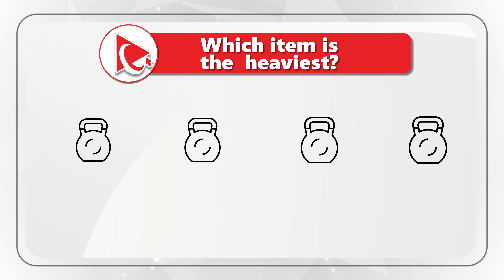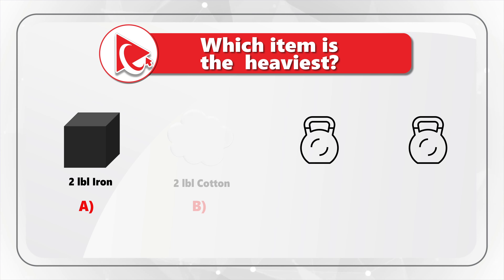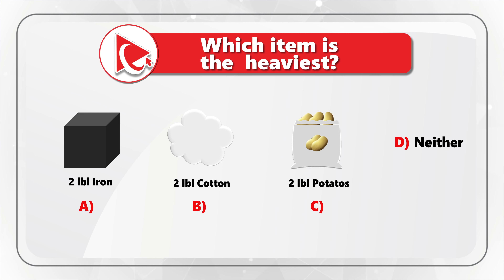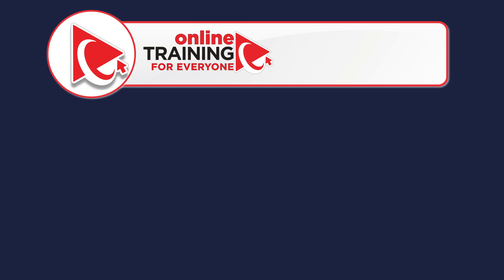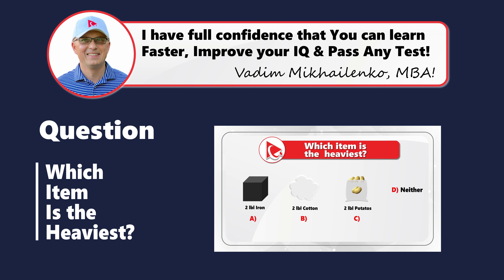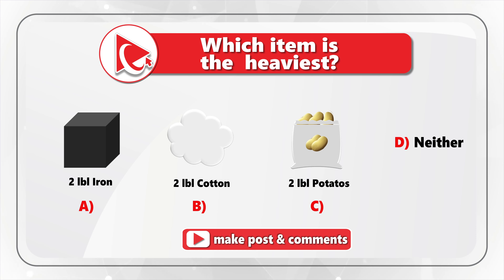You are presented with four possible choices: Choice A — two pounds of iron; Choice B — two pounds of cotton; Choice C — two pounds of potatoes; and Choice D — neither one. Take a close look to see if you can come up with the answer. I'm moving forward to share with you my version of the solution, and if you have a better way to solve it, please make sure to post in comments.